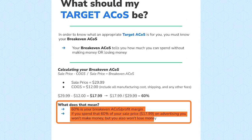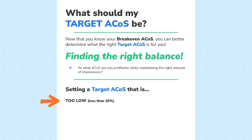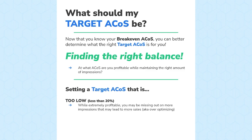This is why it's important in figuring out what your target ACoS might be. It's really about finding the right balance — at what ACoS are you profitable while maintaining the right amount of impressions? Setting a target ACoS that is too low, for example less than 20% out of the gate, is extremely profitable but you might be missing out on more impressions that could lead to more sales. This is basically over-optimizing — you're shooting yourself in the foot by having a target ACoS that is too low.